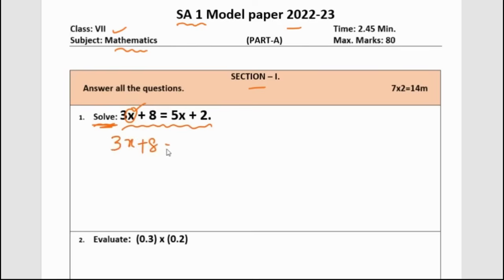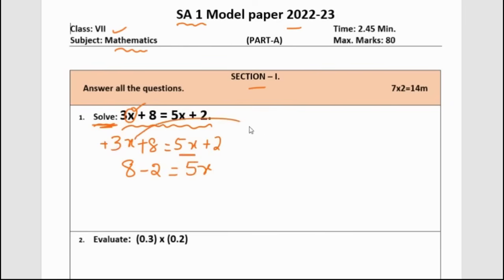3x plus 8 is equal to 5x plus 2. We will bring all x terms together and numbers together. The number 8 stays on the left side. Plus 2 moves to this side and will become minus 2. Keeping 5x on the right-hand side, plus 3x goes to the other side and will become minus 3x. So 8 minus 2 is 6, and 5x minus 3x — both are like terms — gives 2x.